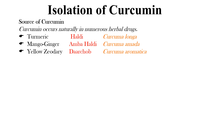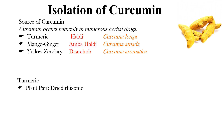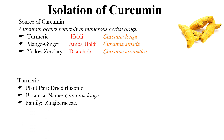Here we will know the method for the isolation of curcumin from turmeric. Turmeric is a dried rhizome of the plant with botanical name Curcuma longa, belonging to the family Zingiberaceae. We have taken turmeric for the isolation of curcumin as standard turmeric has a curcumin content of not less than 1.5%.